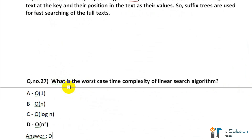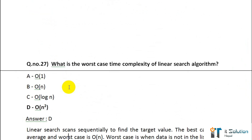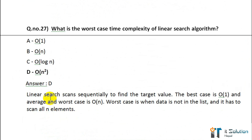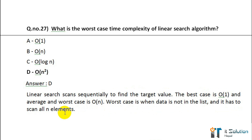Question number 27: What is the worst case time complexity of linear search algorithm? Its correct answer is O(N). Linear search scans sequentially to find the target value. The best case is O(1), and the average and worst case is O(N). The worst case is when the data is not in the list and it has to scan all N elements.